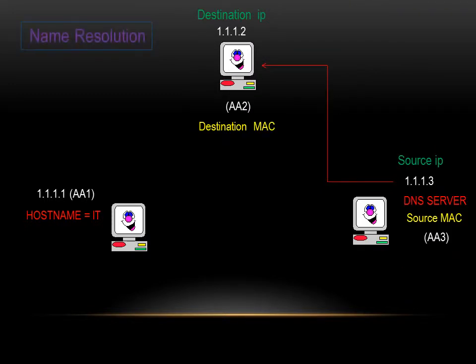Second, AA3 will tell AA2 that the DNS MAC address is AA3.